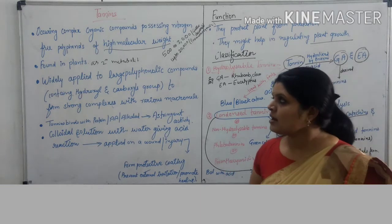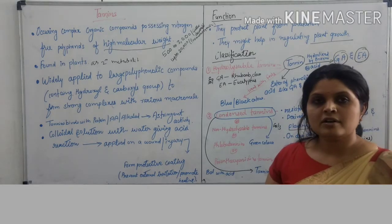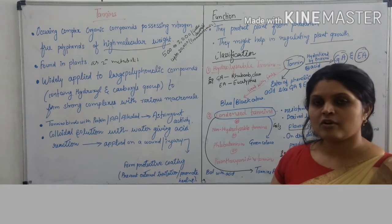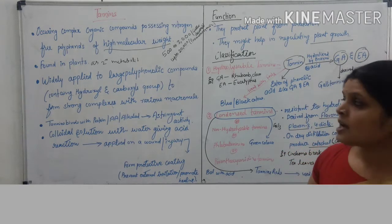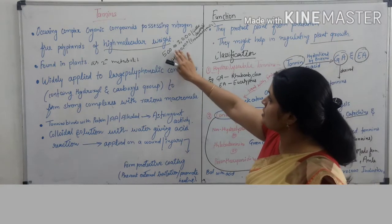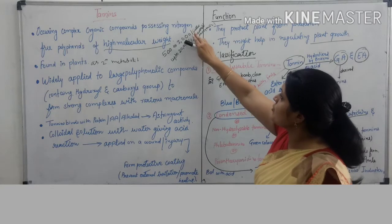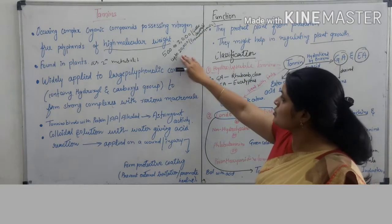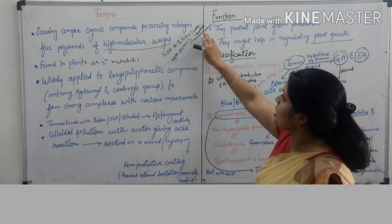Tannins are a group of organic complex compounds possessing nitrogen-free polyphenolics of high molecular weight. High molecular weight ranges from 500 to 3000, found in gallotannins and ellagitannins, and up to 20,000, found in proanthocyanidins.